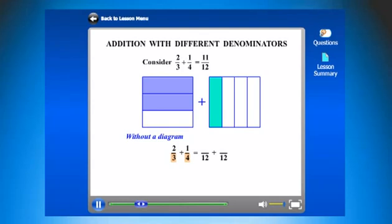Now our first fraction there, two-thirds, the bottom number three—how do we change that to become 12? Well, we do by multiplying by four. And if you multiply the bottom by four, we multiply the top by four as well. Our second fraction, which was a quarter, had four as a denominator. So how do we change that four to a 12? We do by timesing by three. Again, if we times the bottom by three, let's times the top by three as well. So we've got two times four, that's eight, and one times three is three.